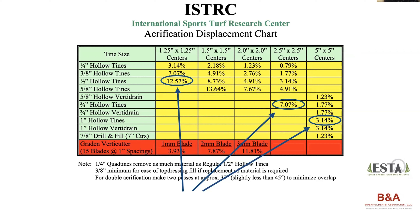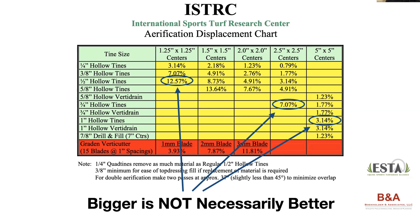Here's a chart on why larger tines are not necessarily always better. Looking at half-inch hollow tines on one-and-a-quarter by one-and-a-quarter inch centers, you're removing about 12.6 percent of the entire surface. Whereas with three-quarter inch hollow tines on two-and-a-half by two-and-a-half inch centers, you're only getting seven percent. And when you go to a five-by-five spacing with a one-inch tine, you're down to 3.14 percent. Sometimes doing tighter spacing with smaller tines actually does a nicer job for you.